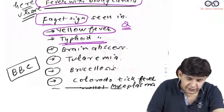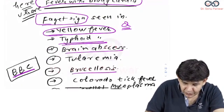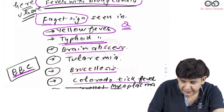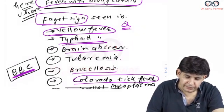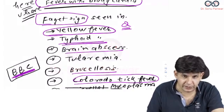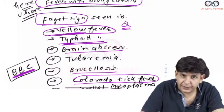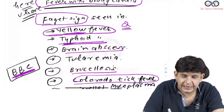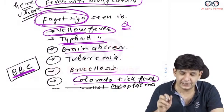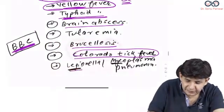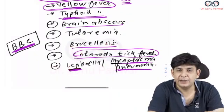Then you have this BBC. The BBC helps you remember: brain abscess, brucellosis, and Colorado tick fever. Somebody is having yellow tie, that is yellow fever and typhoid fever, which also have Faget sign.